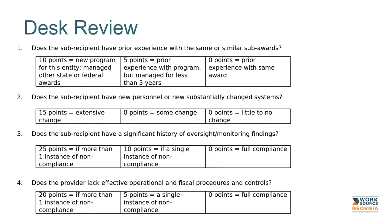Risk assessment questions include: Number one — does the subrecipient have prior experience with the same or similar subawards? 10 points for new programs, five points for prior experience managed less than three years, and zero points for prior experience with the same award. Number two — does the subrecipient have new personnel or substantially changed systems, such as a new director, youth programs manager, adult and dislocated worker programs manager, or financial managers? 15 points for extensive change, eight points for some change, and zero for little to no change. Number three — does the subrecipient have a significant history of oversight or monitoring findings? 25 points for more than one instance of noncompliance, 10 points for a single instance, and zero for full compliance.